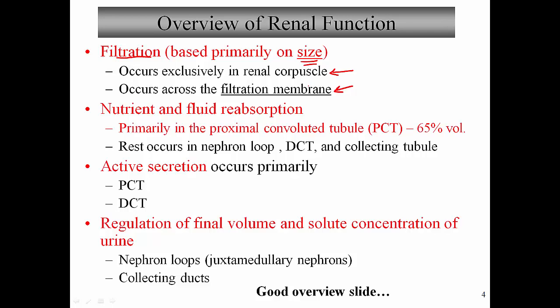The filtration slits are formed by the visceral layer of the glomerular capsule and the podocytes. The next step is nutrient and fluid reabsorption, which occurs primarily in the proximal convoluted tubule. This is a very important number: 65% of the volume of filtrate entering the PCT gets reabsorbed. So the bulk of reabsorption happens in the PCT — substances like sodium, glucose, and other ions. The rest of reabsorption occurs in the nephron loop, the distal convoluted tubule, and somewhat in the collecting tubule, which is mainly for water reabsorption.